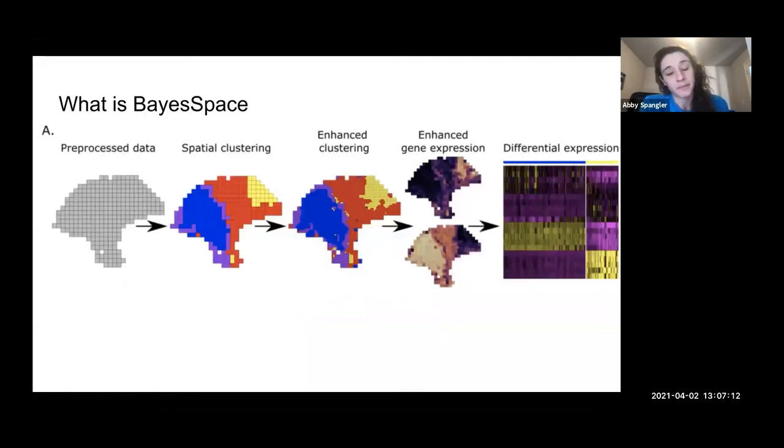So BaySpace, the general idea of it is that you have spatial RNA-seq data, like what I just showed you. And you cluster it, keeping in mind the spatial aspect. And then you take that original clustering and you divide each of the spots into multiple sub-spots. And then you do an enhanced clustering, which gives you a higher resolution. And then you can take that enhanced clustering, convert it back into gene expression data and redo your differential expression.